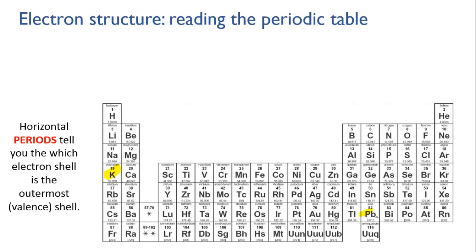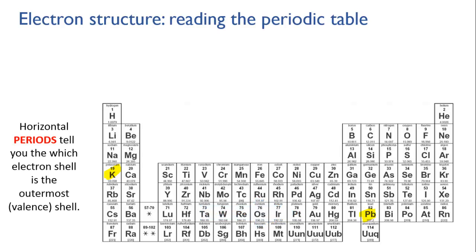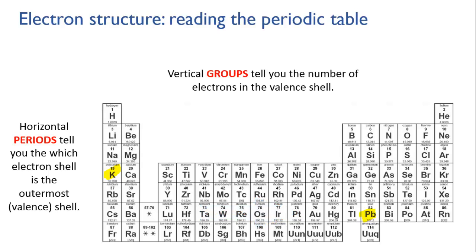And for lead, the sixth electron level is the valence shell. The vertical groups of the table tell you the number of electrons in the valence shell — in other words, how many valence electrons the atom has.